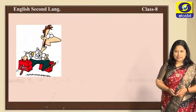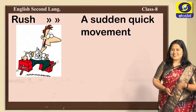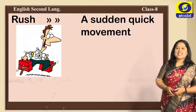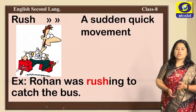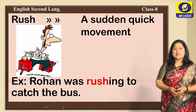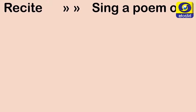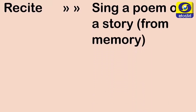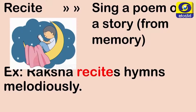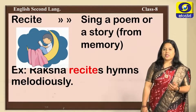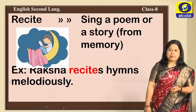Can you think what this man is doing? He is rushing. Rushing is nothing but a sudden quick movement — Odu vudu. Example: 'Rohan was rushing to catch the bus.' You can see Rohan is rushing towards his bus. 'Recite' means to sing a poem or a story from memory. Reciting is quoting from memory — either a poem, a story, or an excerpt. Example: 'Raksha recites hymns melodiously.'